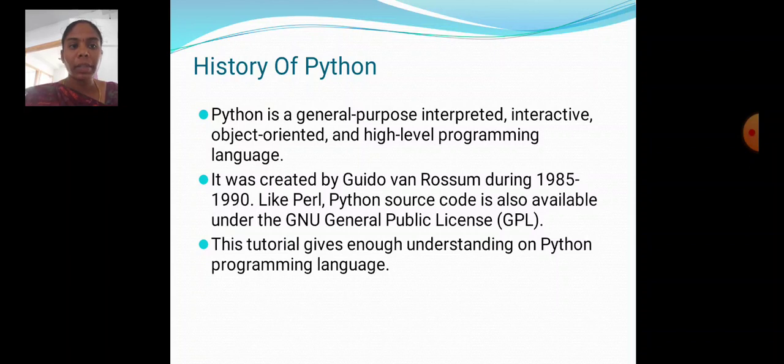History of Python. Python is a general-purpose, interpreted, interactive, object-oriented, high-level programming language. It was created by Guido Van Rossum during 1985-1990. Like Perl, Python source code is also available under the GNU General Public License.